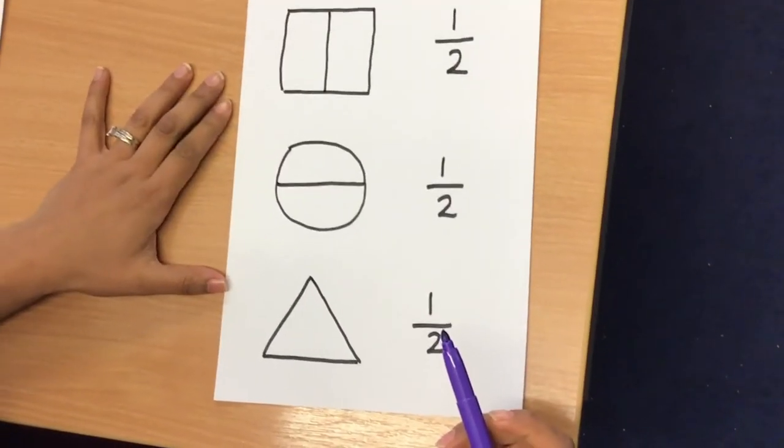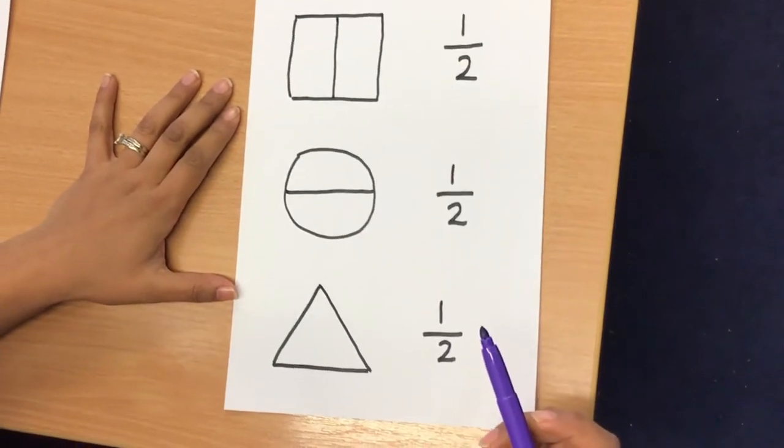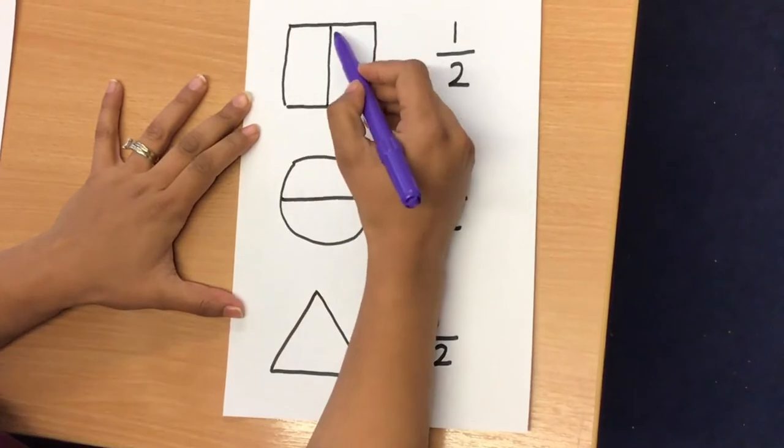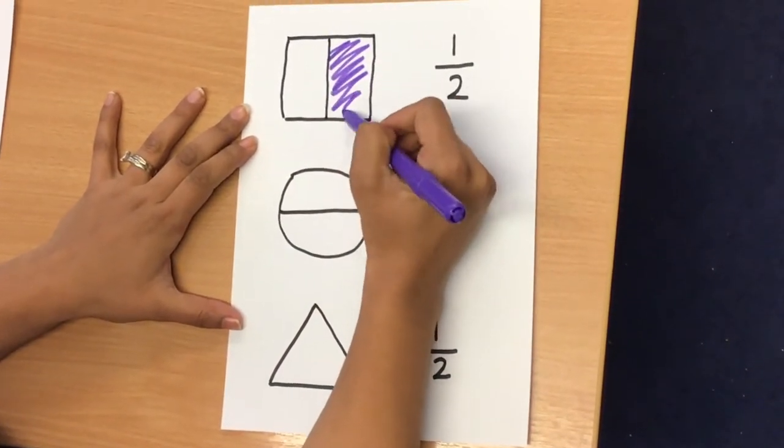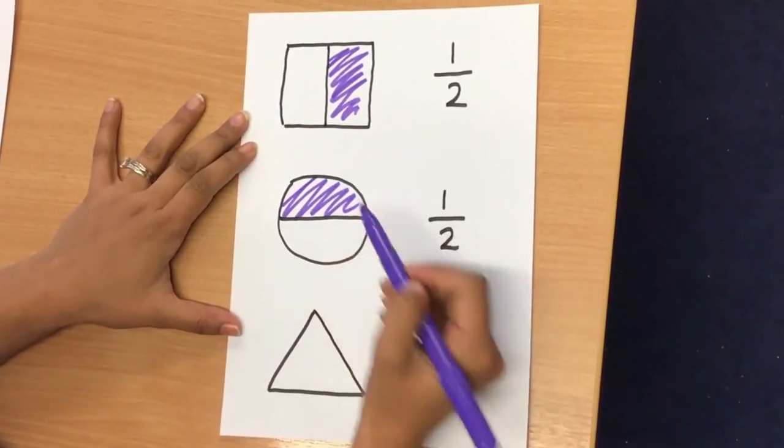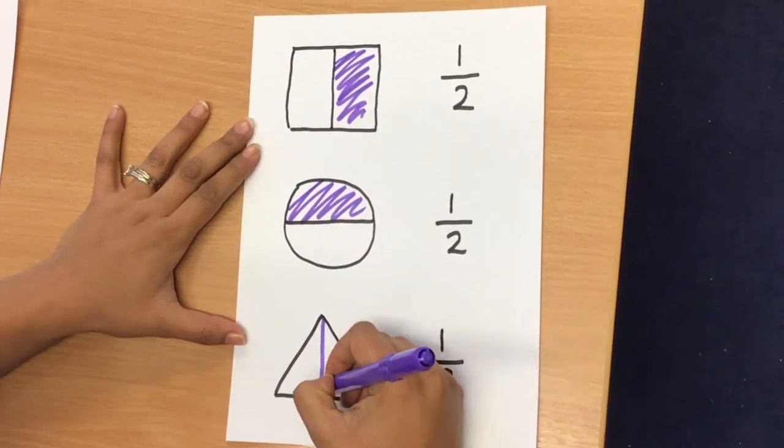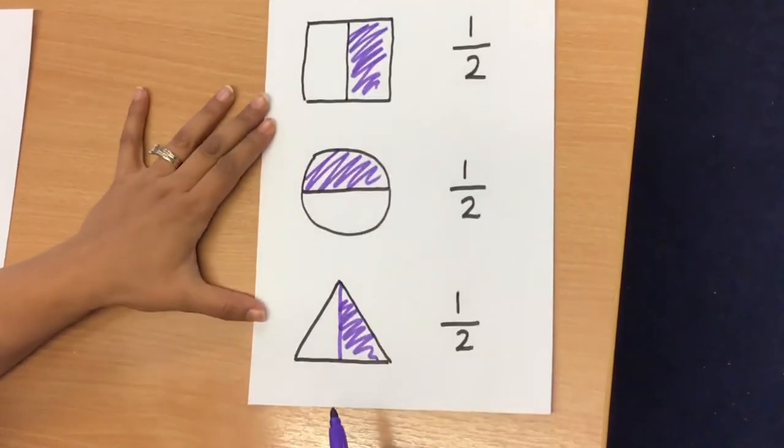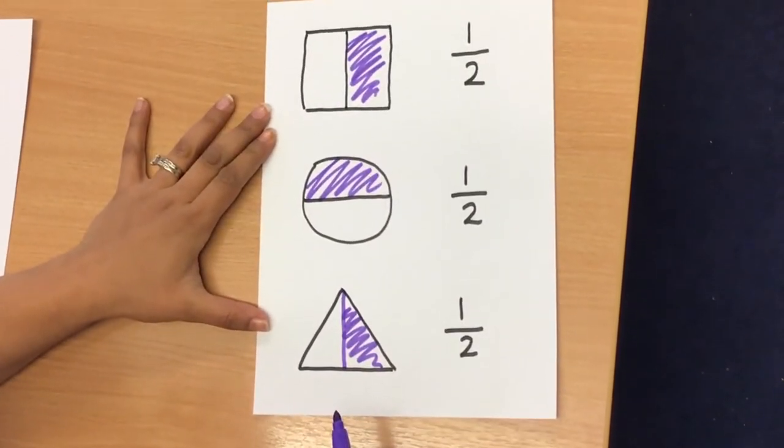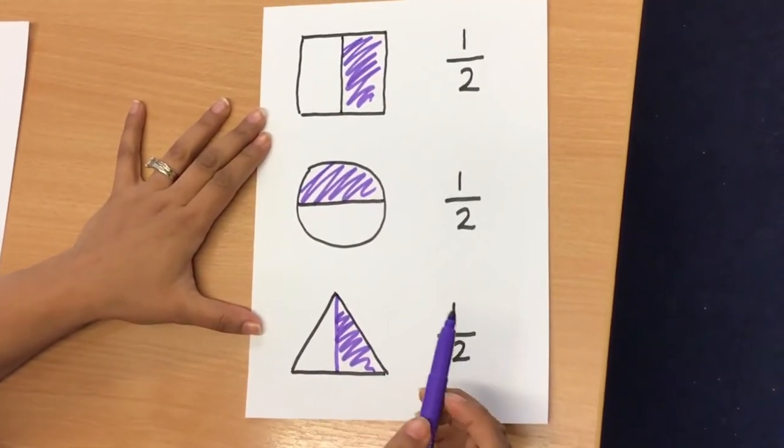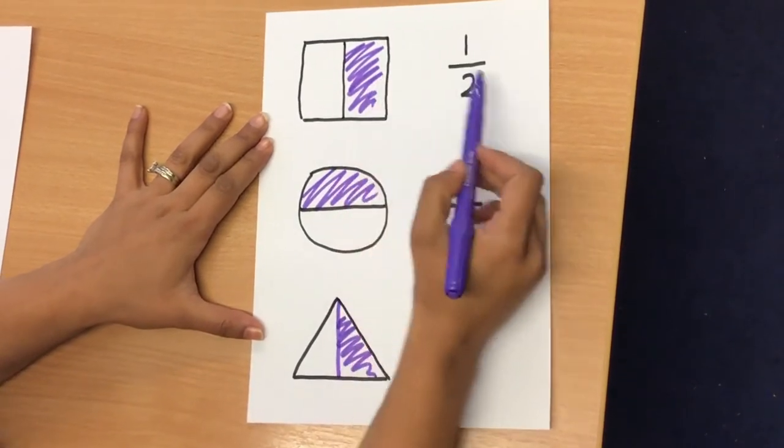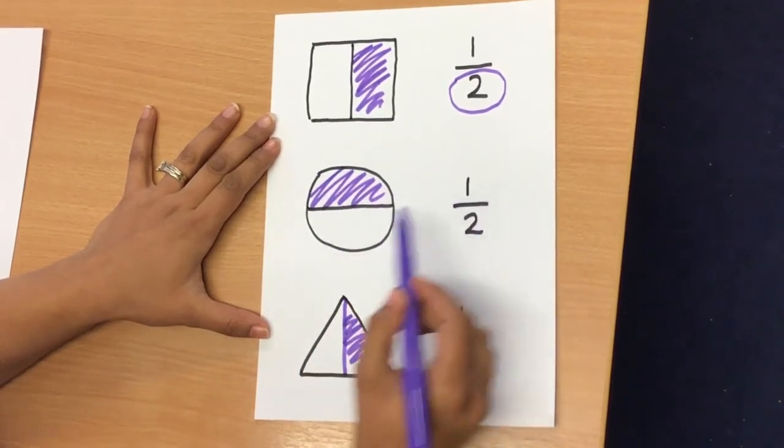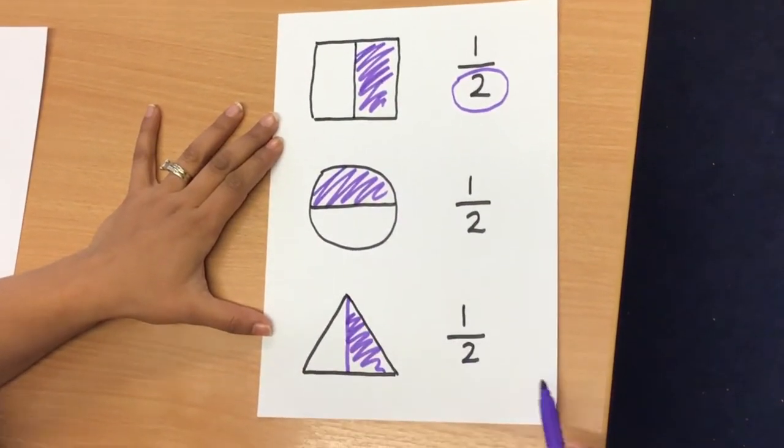So as you can see, a half can be represented in lots of different shapes and forms. If I was to shade in a half, it would look very different on each of these shapes. But as you know from earlier on, as long as I have represented one out of a possible two in each form, it doesn't matter what the shape is.